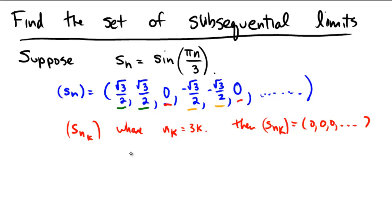So, for S, which would be the set of all sub-sequential limits, we can see that there are sub-sequences that limit towards negative radical 3 over 2, there are sub-sequences that limit towards 0, and there are sub-sequences that limit towards radical 3 over 2.